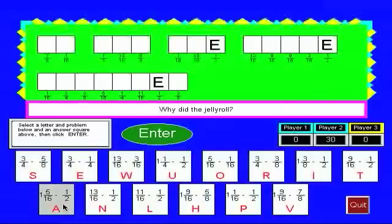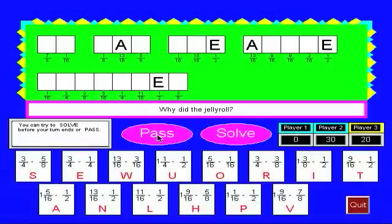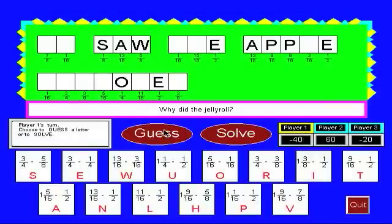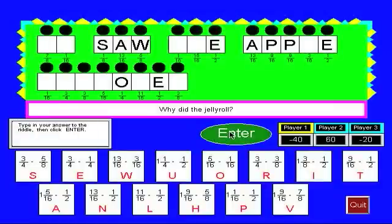And a is one and five sixteenths minus one half. So we have to borrow, this will give us 21 sixteenths minus eight sixteenths. So that should be 13 sixteenths. After solving a few more letters, I think we're ready to solve this now.